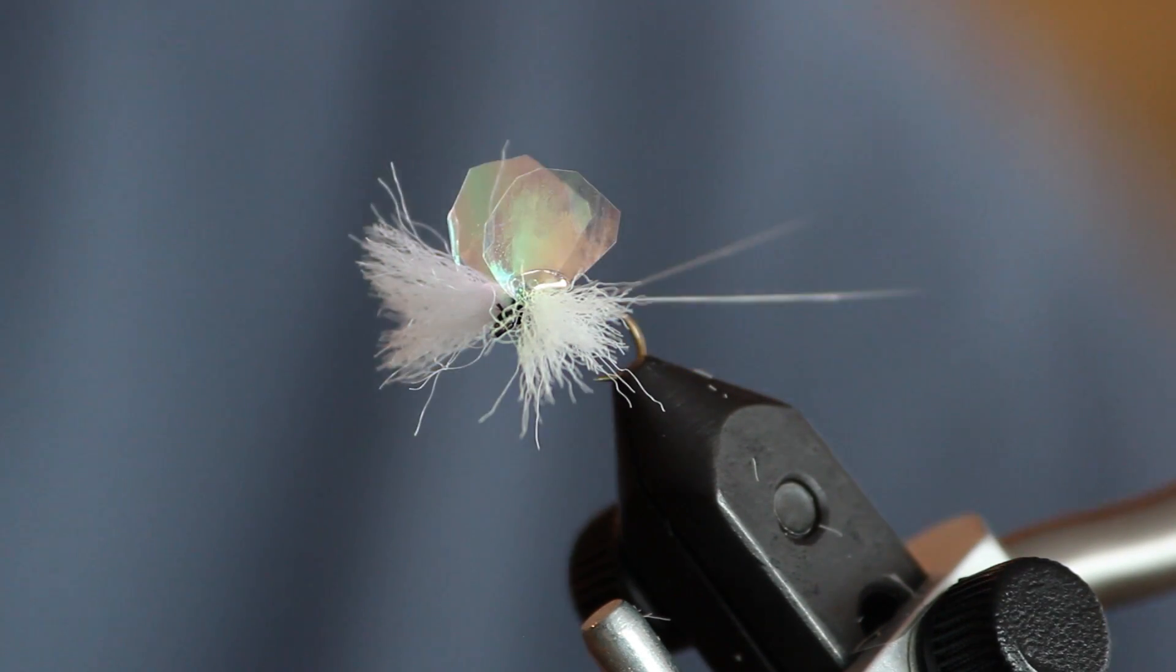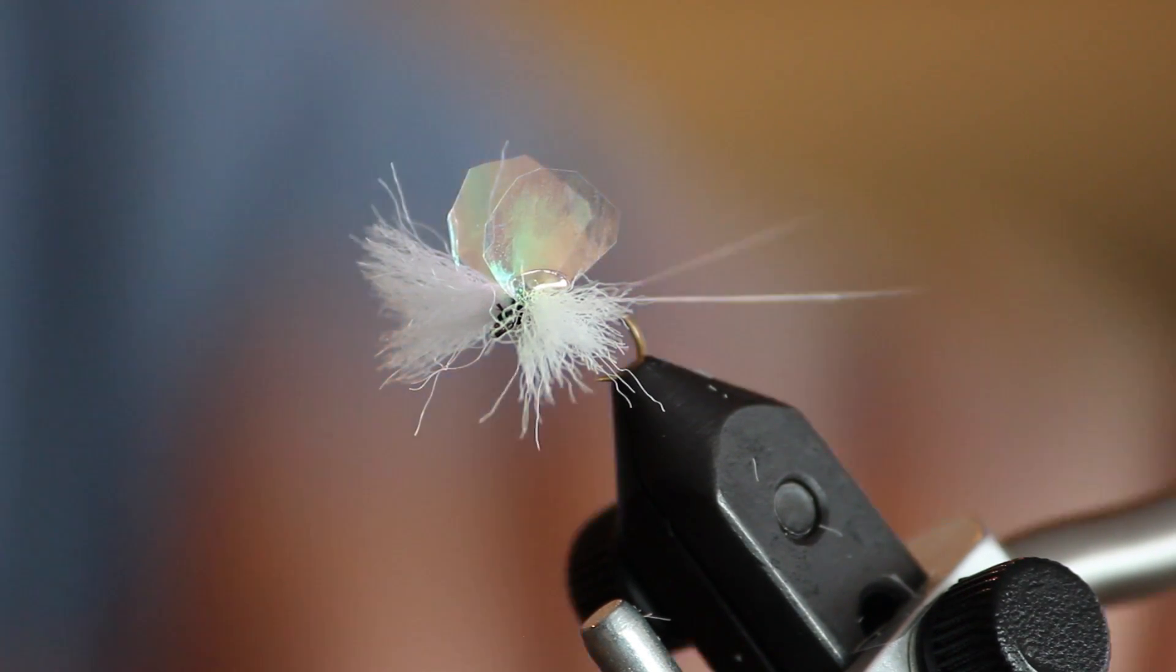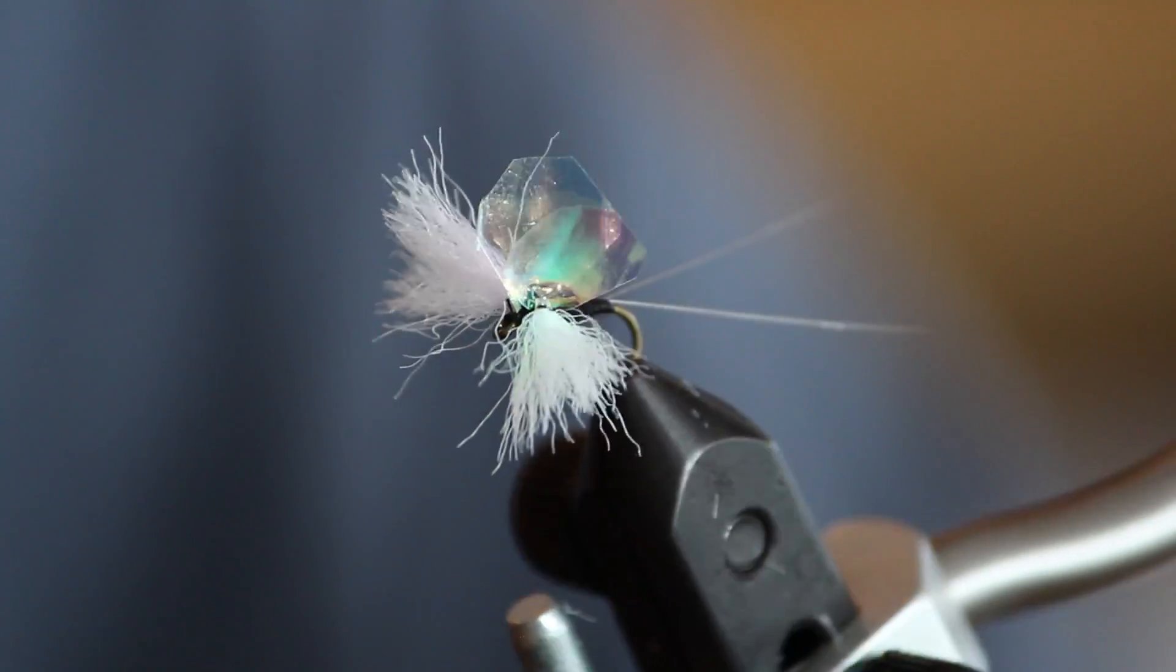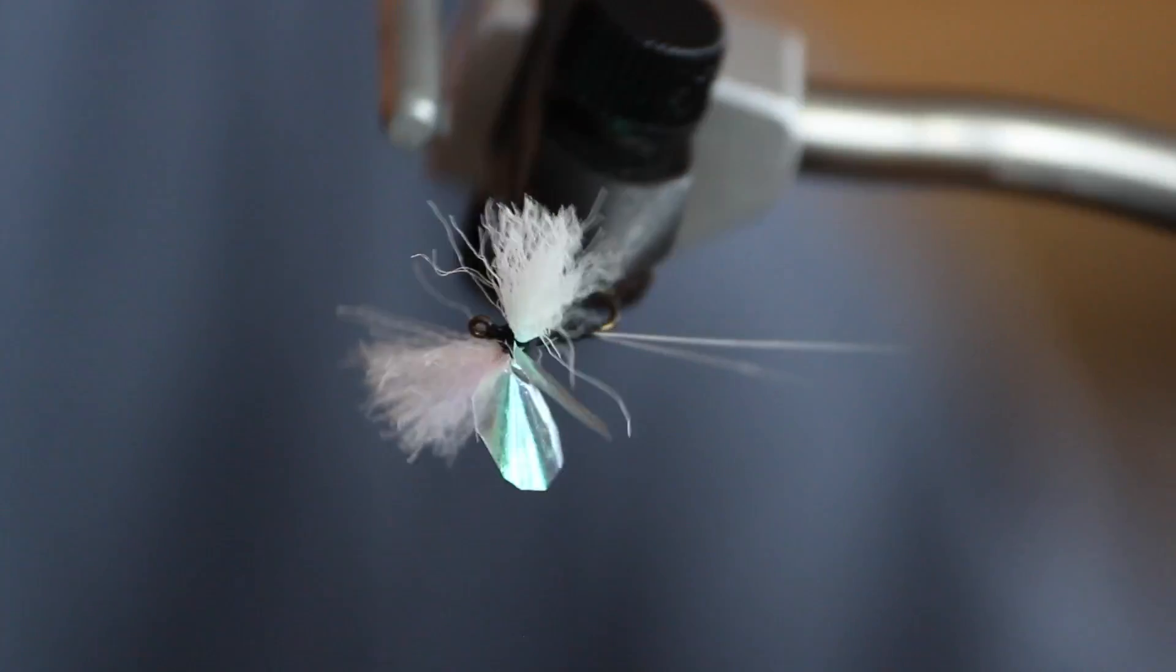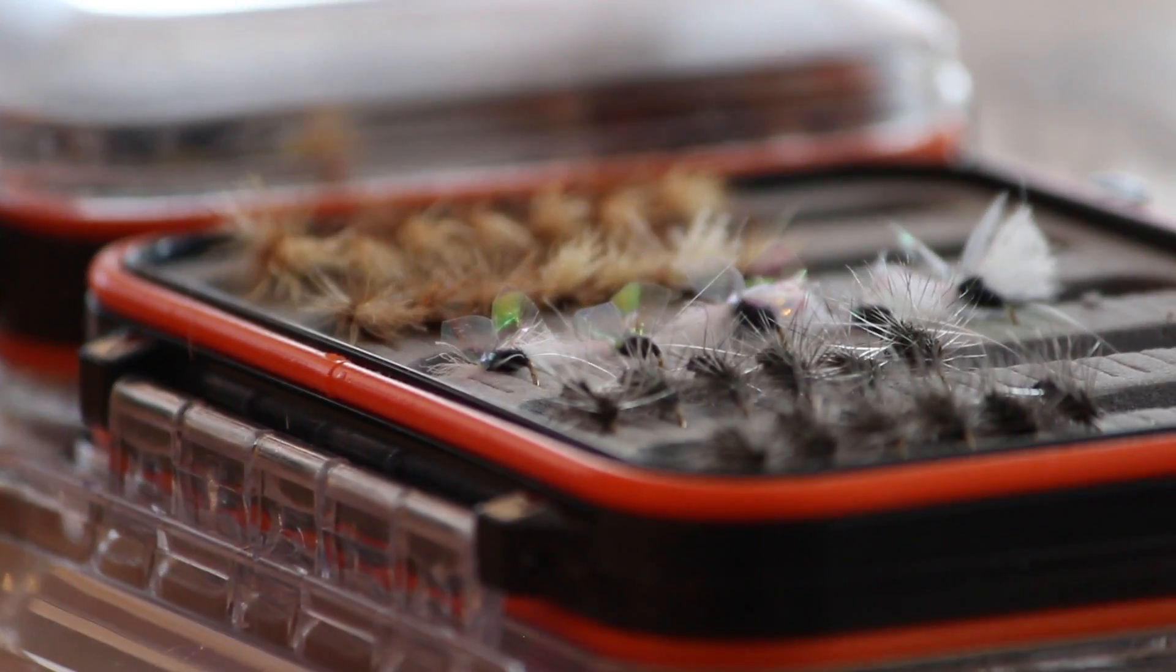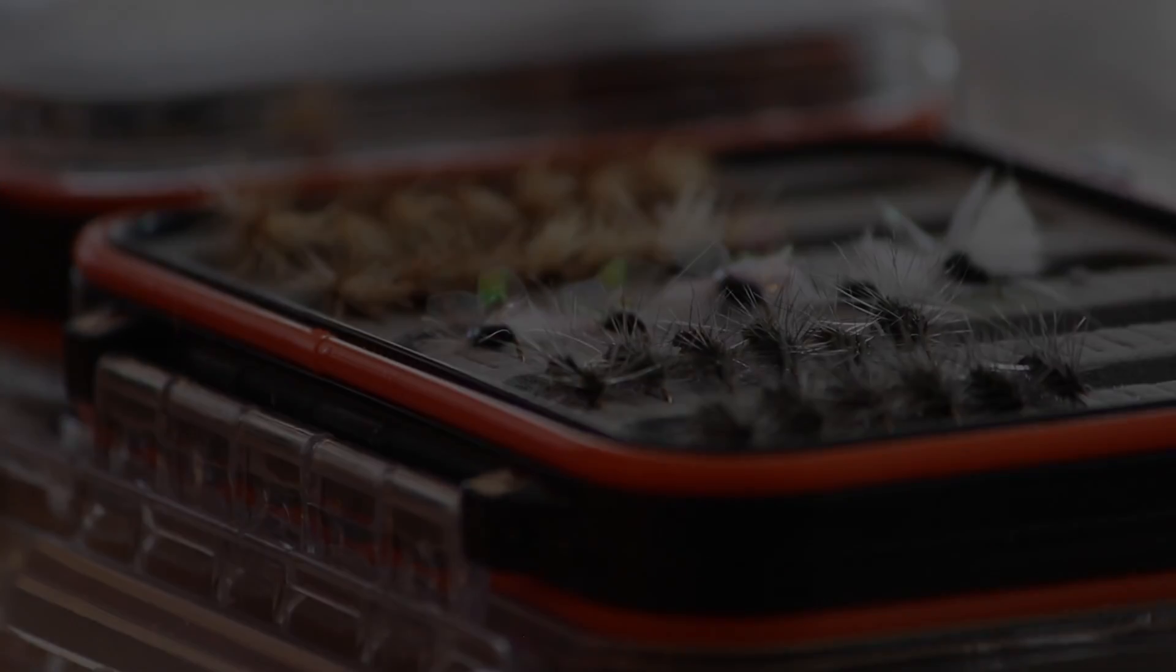You have just completed CWM's Sparkle Spinner. It's a great fly throughout summer when Tricos are seen hatching and in late August especially. It's a great fly to have in your fly box. Hope you enjoyed the video and see you next time.